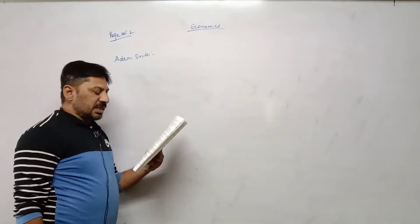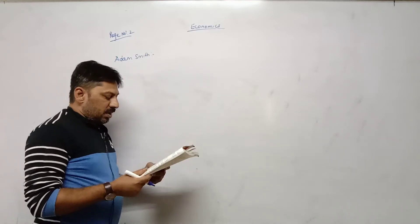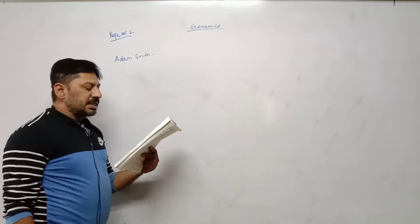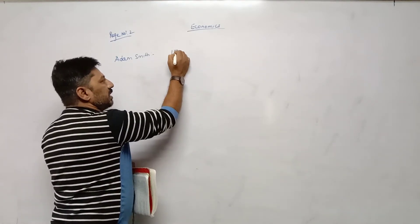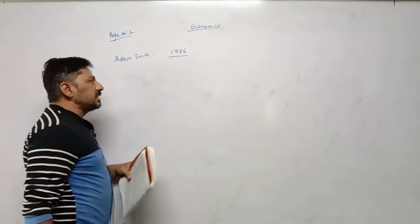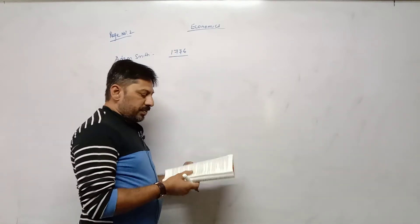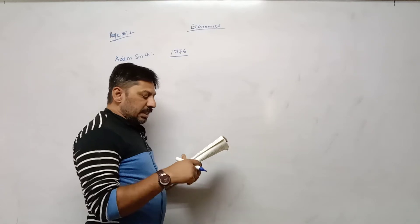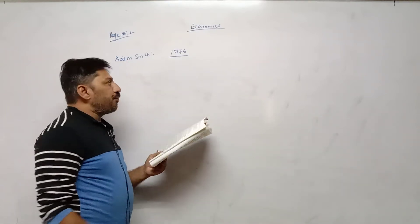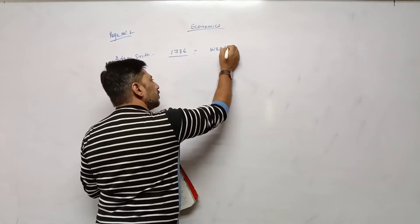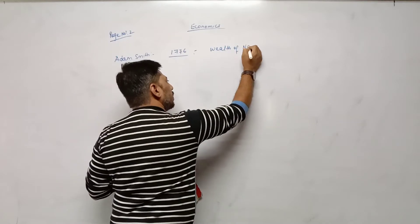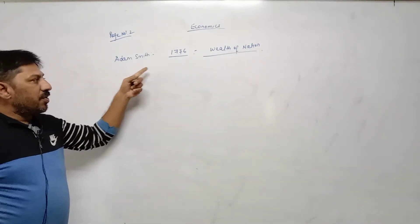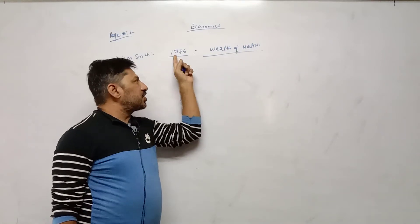Under the heading Development of Economics as a Science in the West, Adam Smith in 1776 wrote a book named An Inquiry into the Nature and Causes of Wealth of Nations. This book is popularly known as Wealth of Nations, published in the year 1776.